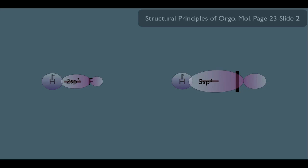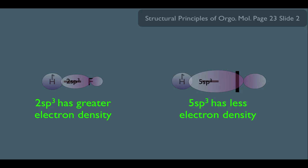It just so happens that two SP3 hybridized orbitals have a greater electron density than five SP3 orbitals. Think of it this way. The two SP3 orbitals are smaller and therefore bring the electrons closer together, whereas the five SP3 orbitals are larger and the electrons have more room to spread out, making them less electron-dense.